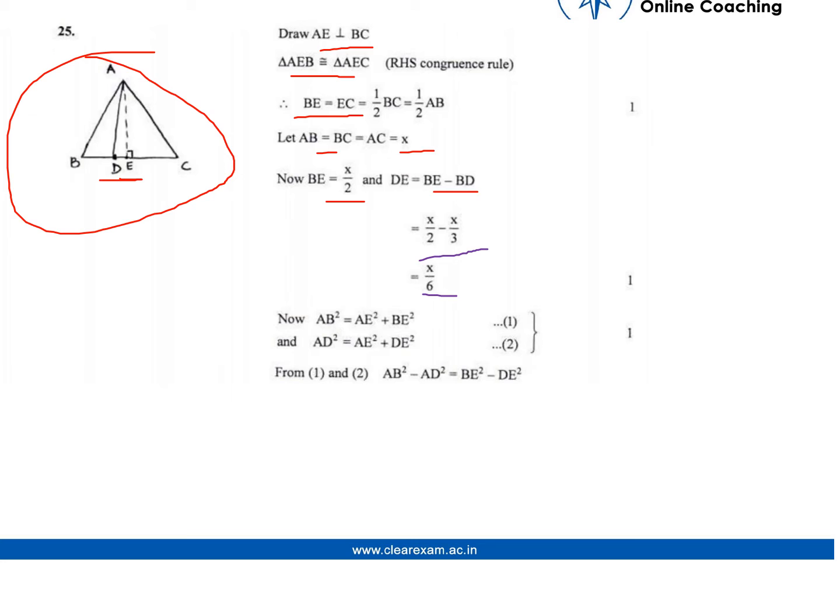We know that AB² equals AE² plus BE² in triangle ABE, and AD² equals AE² plus DE² in triangle ADE. If we subtract the first two equations, AB² minus AD² equals BE² minus DE², since AE² gets cancelled out.